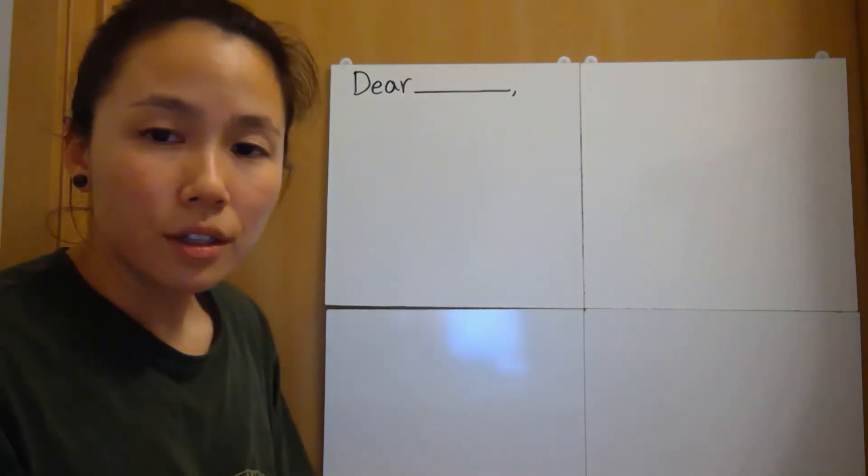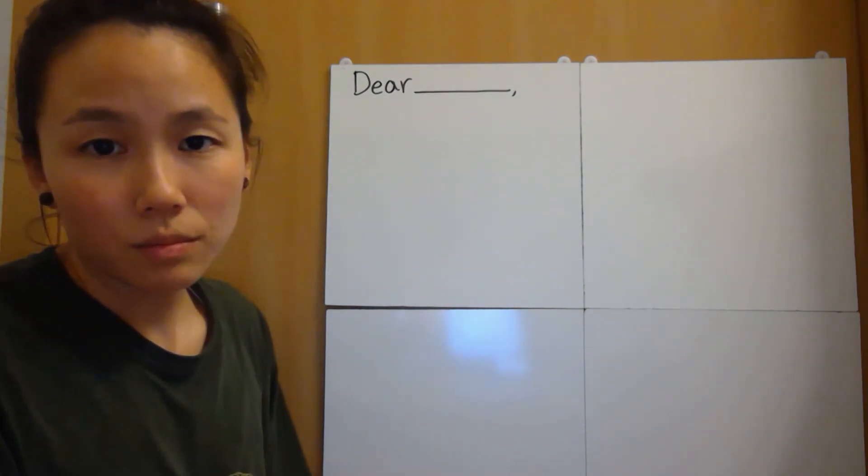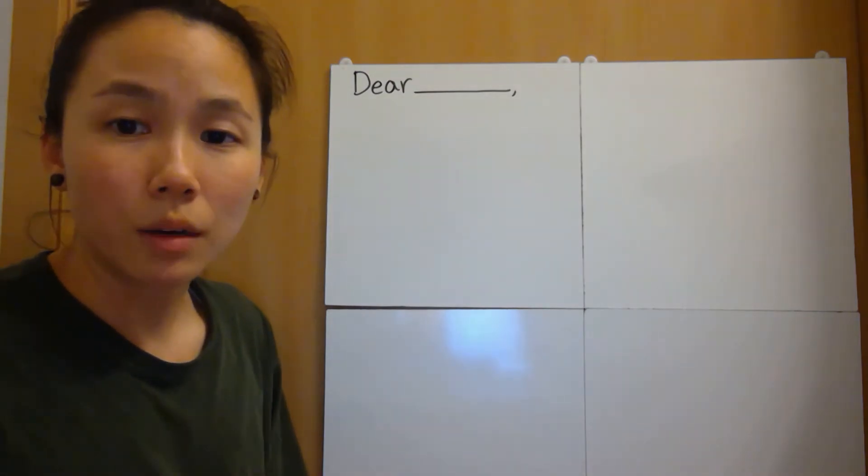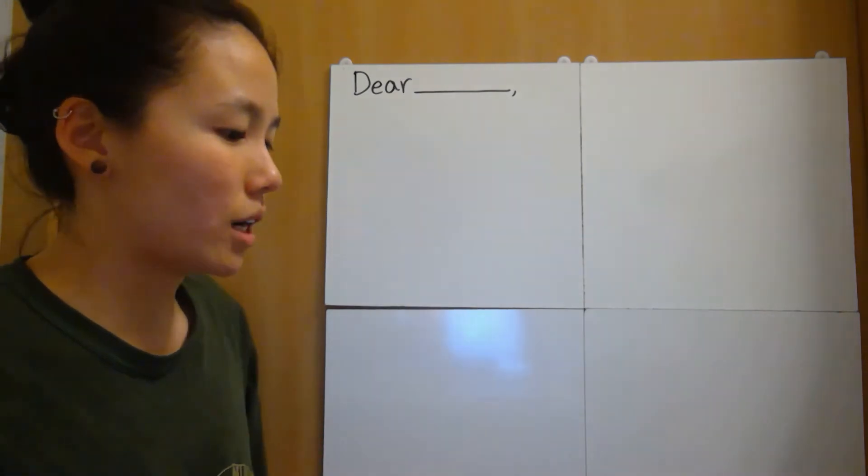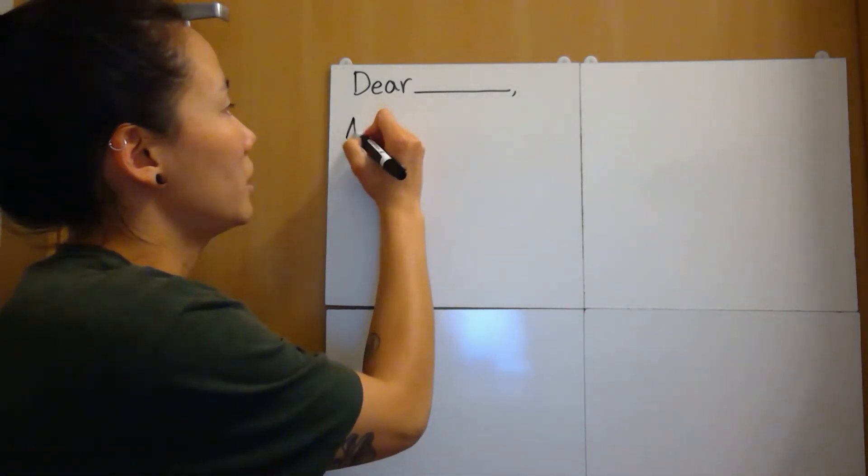And when we wrote our opinions, we always said what it was. So we're talking about a game that we like. We're going to use a complete sentence. I'm not going to just write Monopoly.